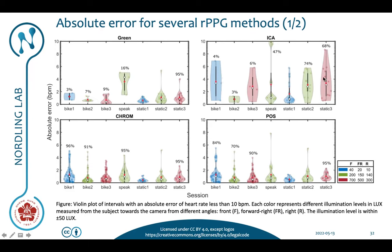For EECA we also have a high failure rate. If we go to CROM, this is a method that performs significantly better. It's actually successful in 100% of the cases for the Bike 3 test with the highest illumination of 700 lux, and also successful in 100% of cases for the Static 1 and Static 2 tests with 40 and 200 lux. In other cases we are also successful in more than 90% of them. The error is a little bit higher when we have a lower illumination level, but on average we have the lowest error for the intermediate illumination level and slightly higher for the higher one.